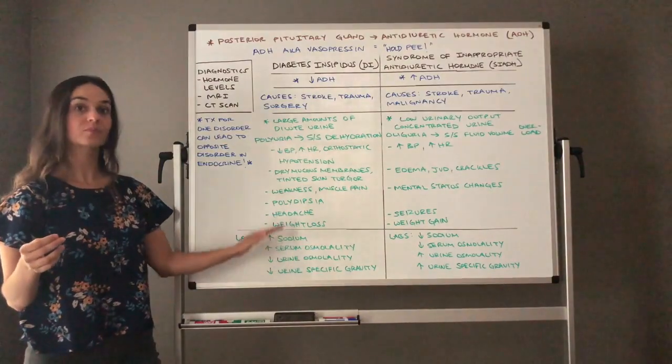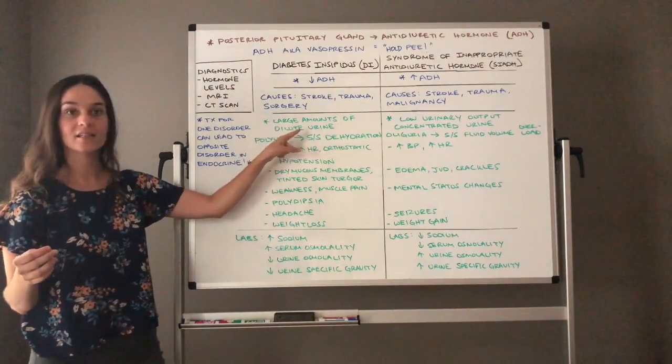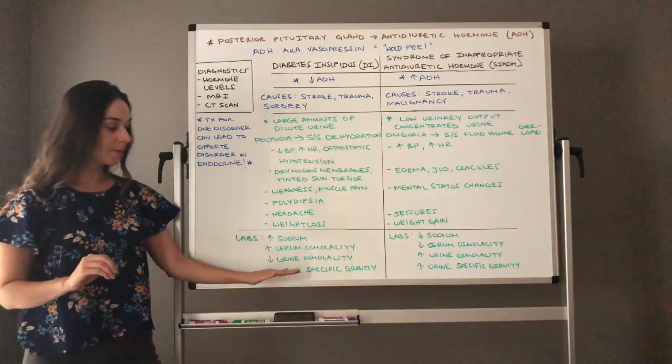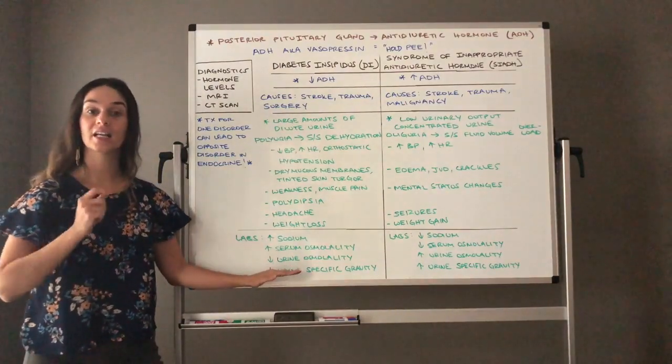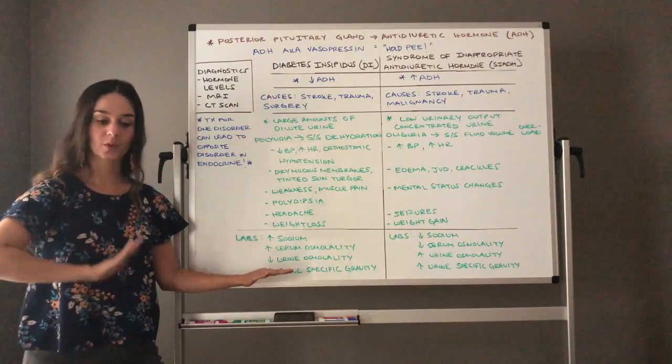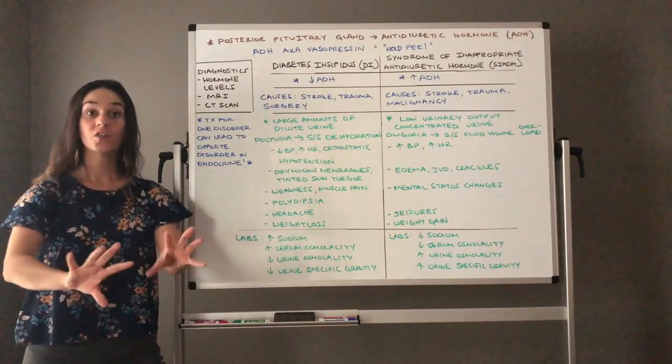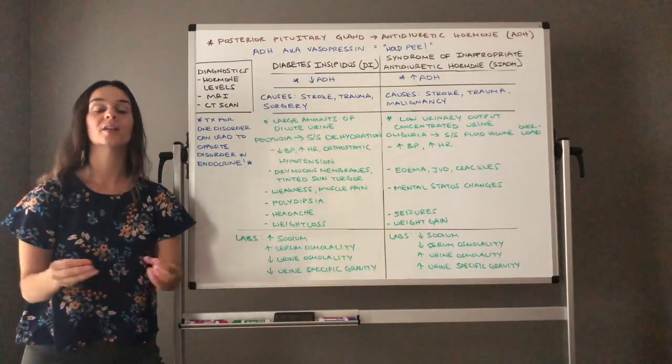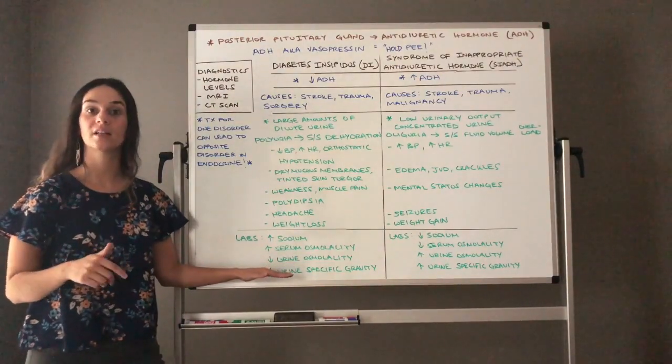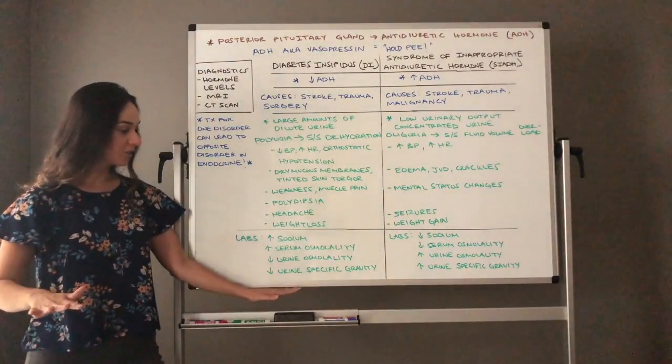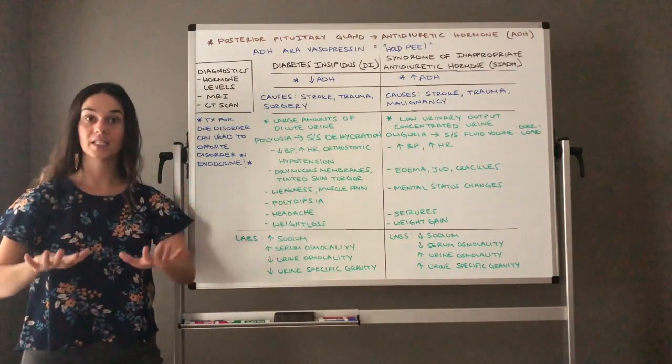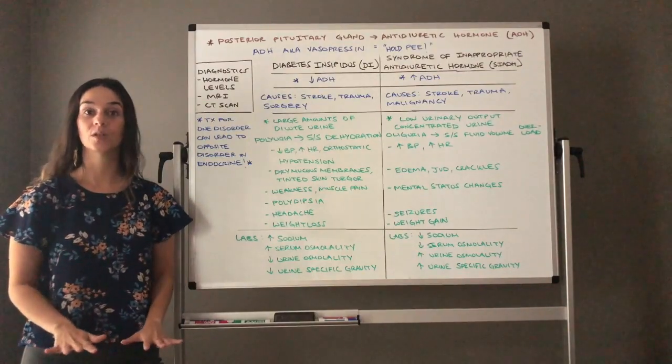So serum osmolality, the amount of particles in your blood. This is a dehydrated client that just lost a lot of water. Aren't the particles in their blood going to be highly concentrated? Yeah, that's why the serum osmolality goes up. Now let's think about the urine. The problem is the client is peeing large amounts of dilute urine. Remember with urine this client is just losing water. ADH only controls water so they're peeing off all this water. The particles in the urine are going to be very diluted. So the particles in the urine or your urine osmolality levels will go down and urine specific gravity again measures particles in the urine. So again those particles will be diluted so that lab value will go down.